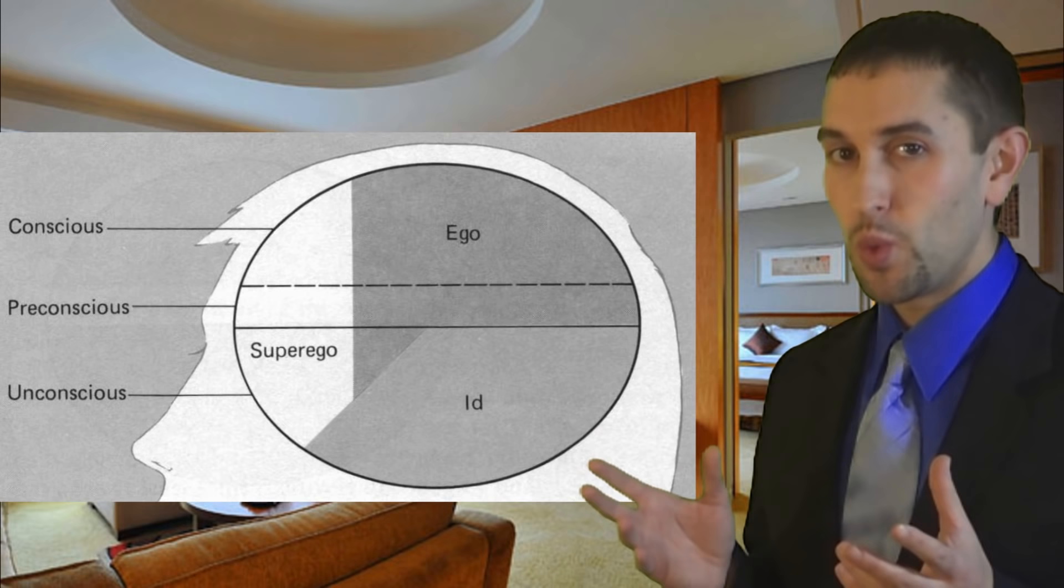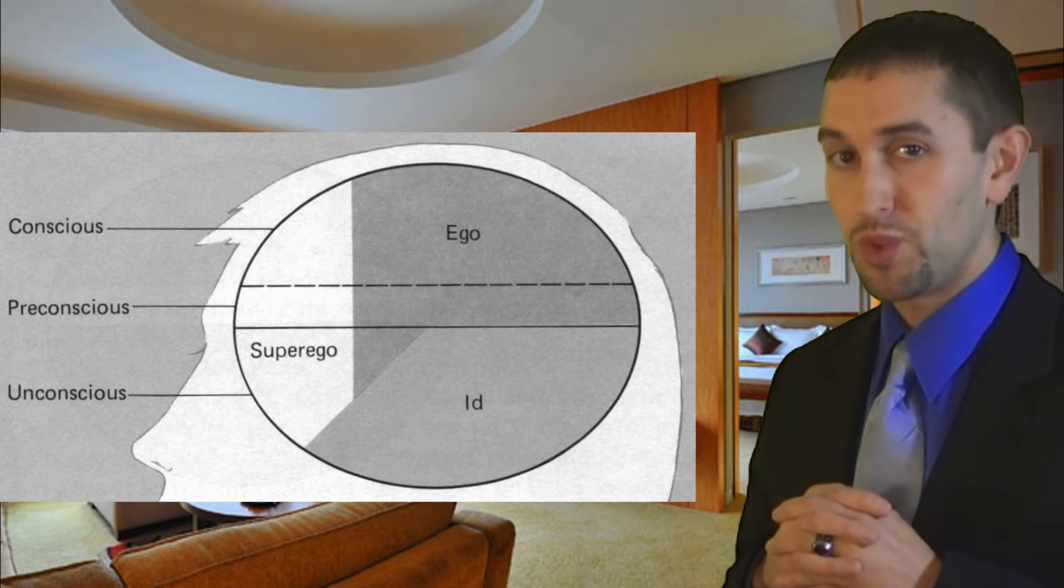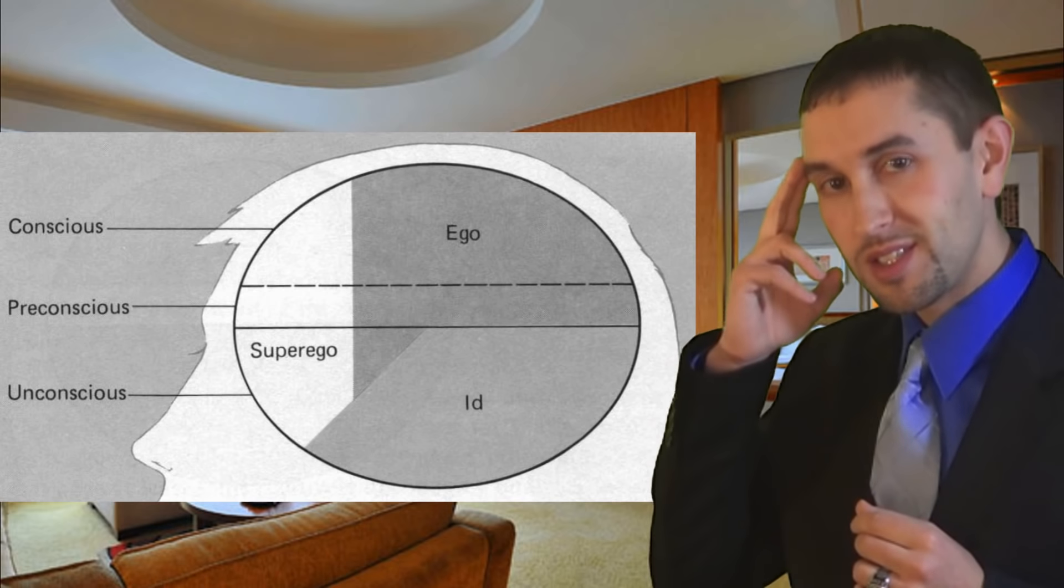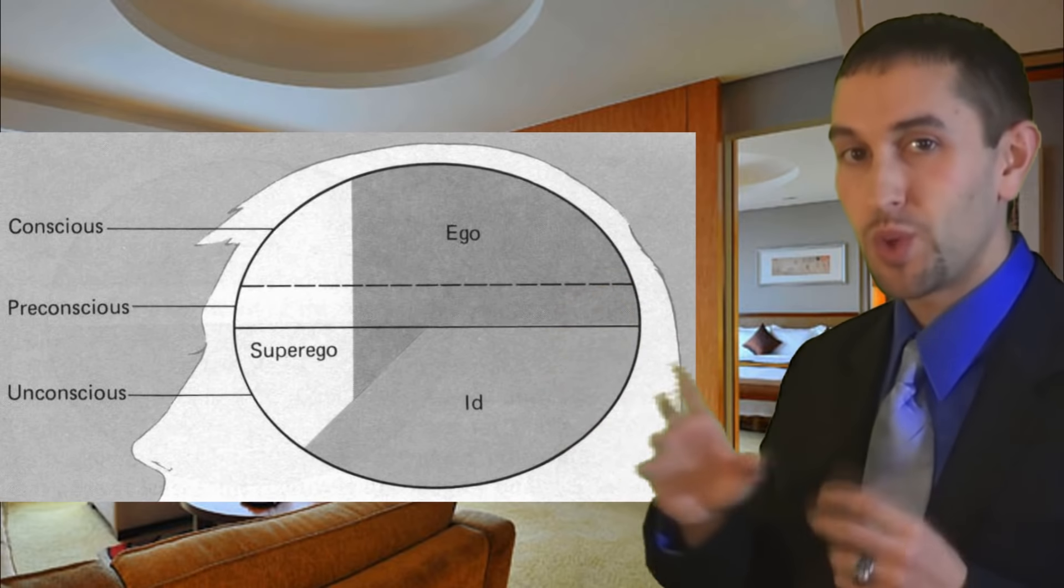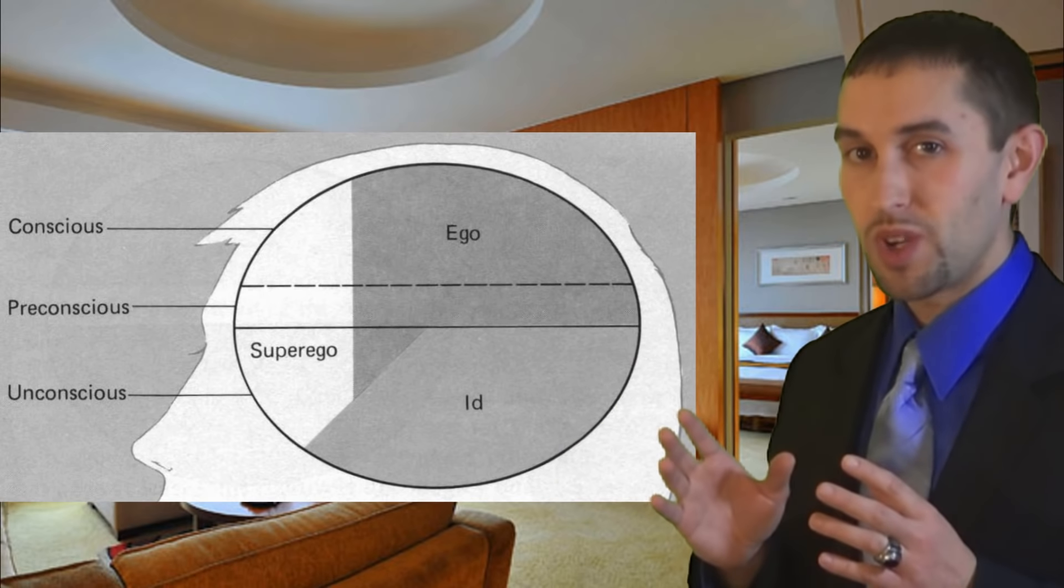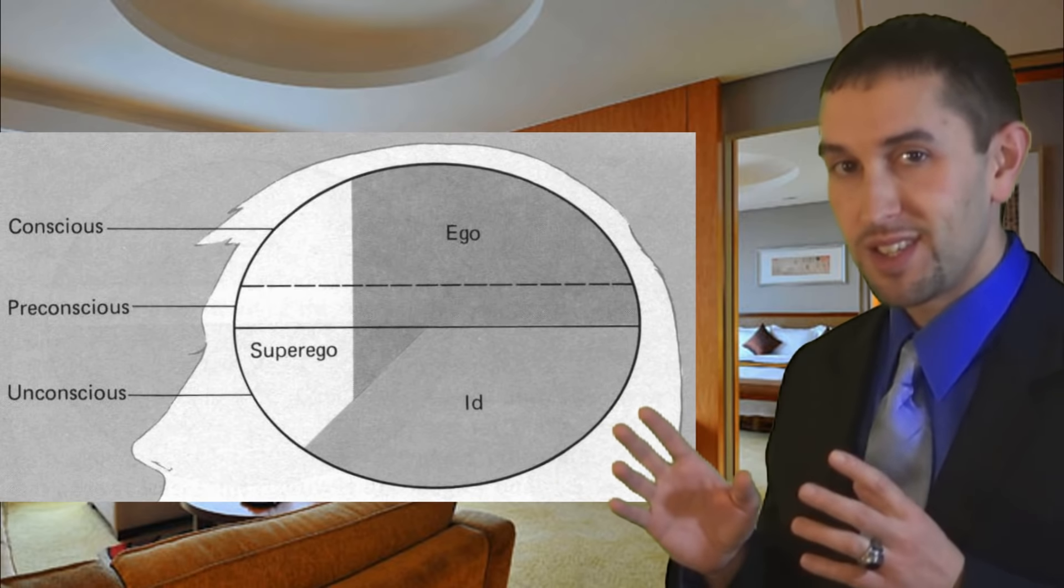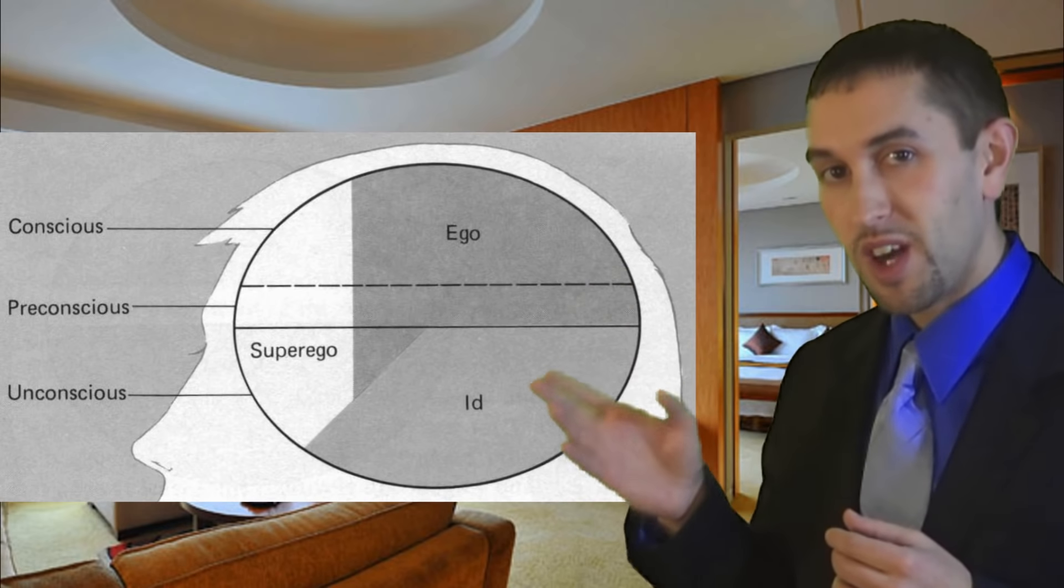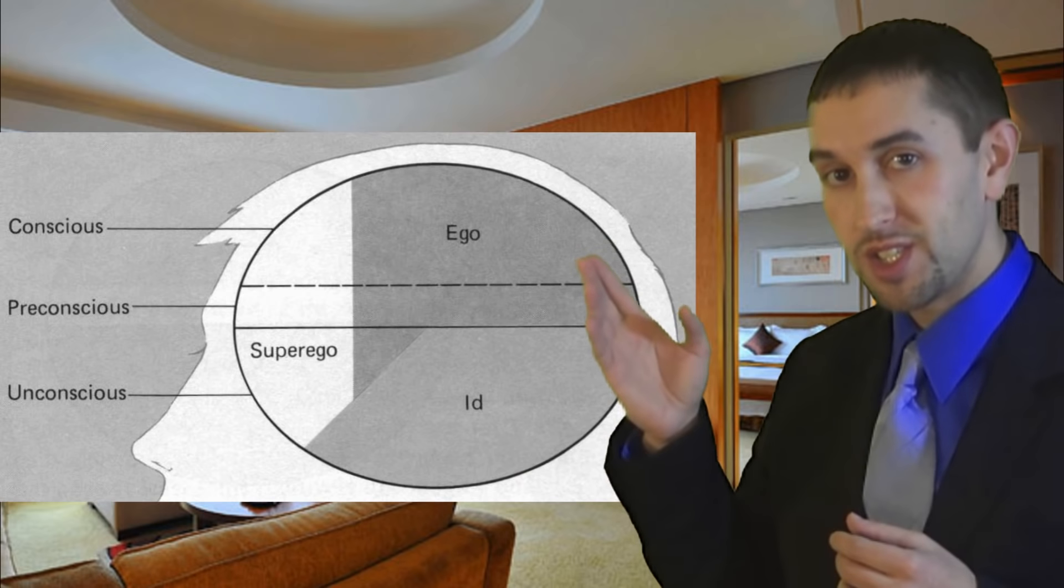Unlike the id, which is simply a collection of instinctual drives, the ego can think about things. It can observe reality and decide what is rational and realistic. The ego is what allows the mind to act. It is like our will. It exists at each of the levels: unconscious, preconscious, and conscious.